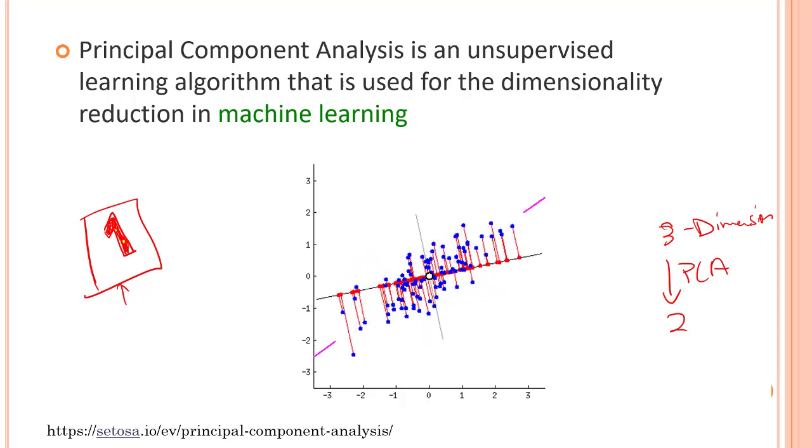Reducing the number of variables for a dataset naturally comes at the expense of accuracy. But the trick to dimension reduction is trading a little bit of accuracy for simplicity, because smaller datasets are easier to explore and visualize.